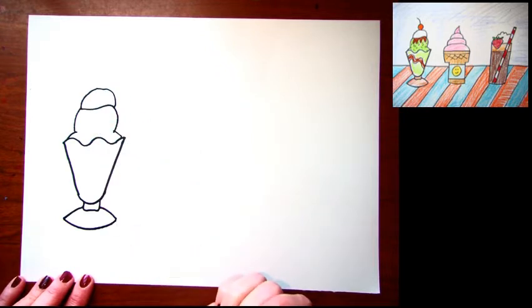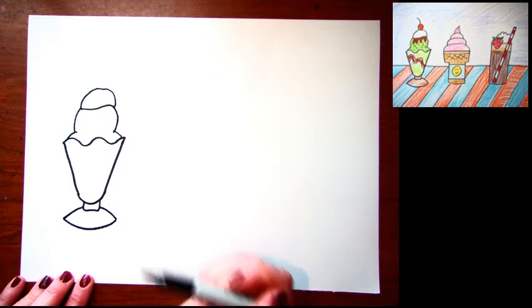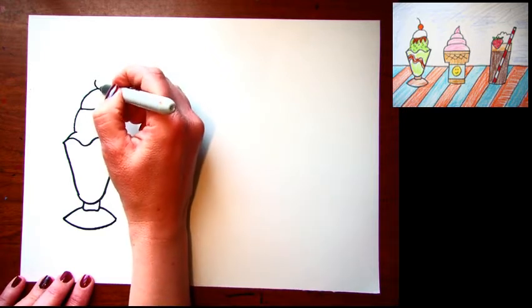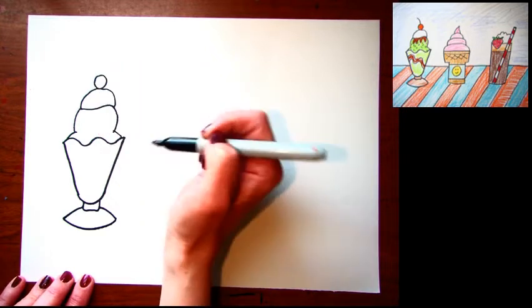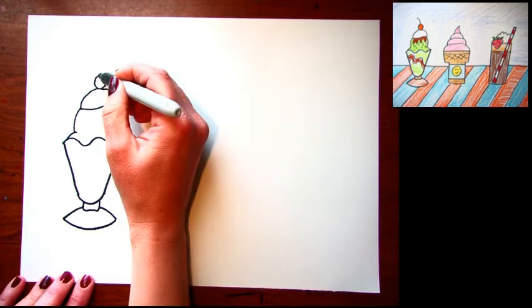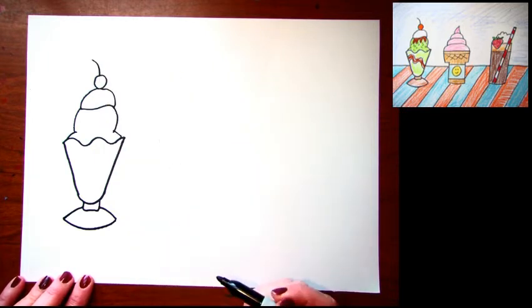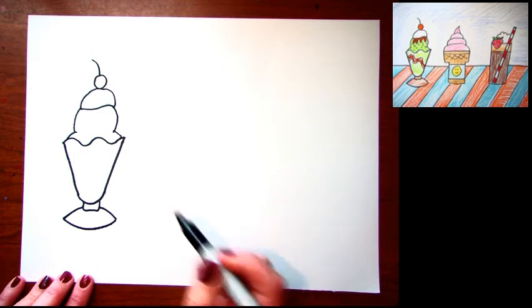You can make different shapes if you want yours to be a different kind of hot fudge sundae. I like having a cherry on top.